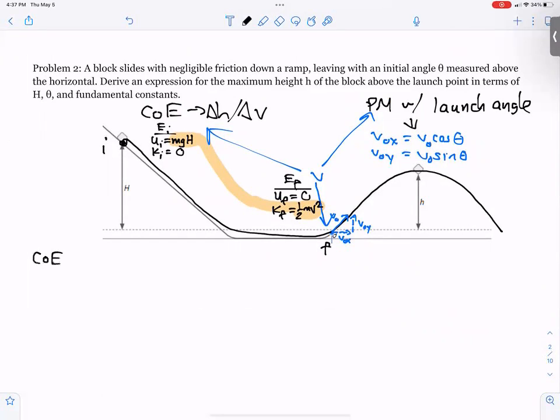So conservation of energy is the first part. We go energy initial equals energy final, in which case mgh equals one half mv squared. Remember, v is the linking variable, so we're going to solve for v. Multiply by two, divide by mass, square root, and v equals the square root of 2gh.